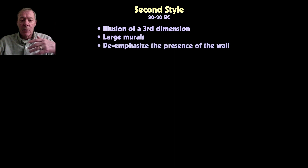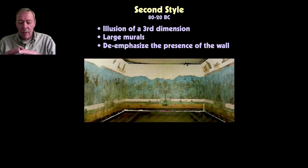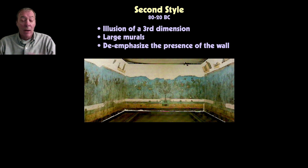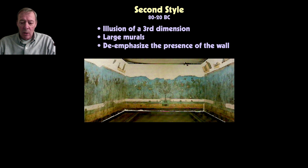The intent of the second style was to de-emphasize the presence of the wall. Here is an example where a landscape is painted on the walls of a villa room—the artist is trying to disguise the wall and make it look like you're looking out at an expansive outdoor scene. There's a garden scene with a mountain skyline extending around all three walls, various trees and bushes, creating the feeling that we are in an open space instead of an enclosed room.